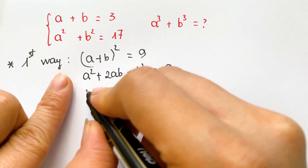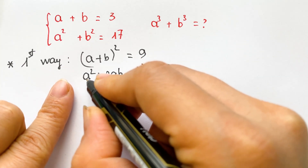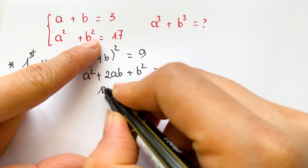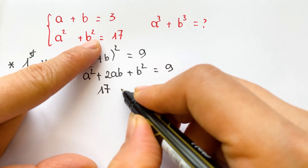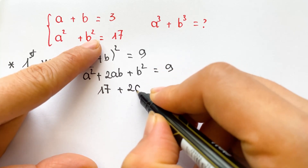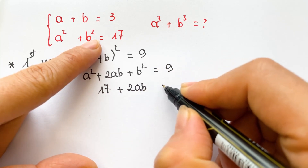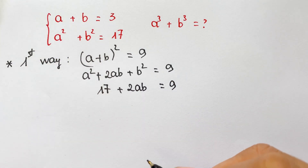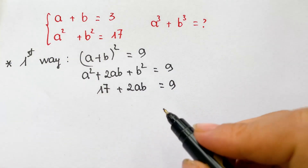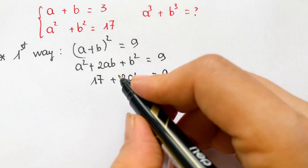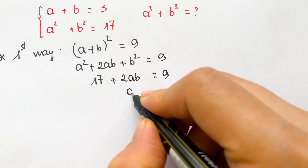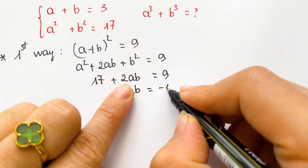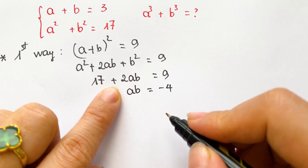And then we can say a squared plus b squared is equal to 17. So plus 2ab is equal to 9. From this equation, we also have ab equals minus 4.